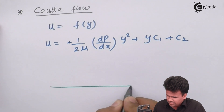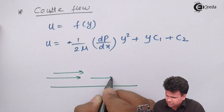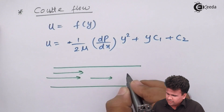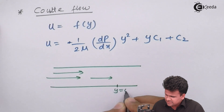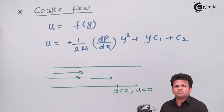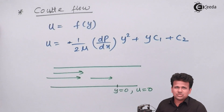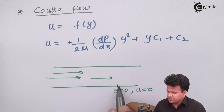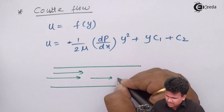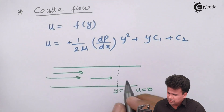Couette flow is a flow in which you have a horizontal surface and the fluid is flowing over this surface, with an object kept on the top surface of the fluid. At y = 0, the fluid velocity u = 0, because this is the initial layer and we apply the no-slip condition — the fluid does not slip over the solid surface. As we move away from the surface, velocity increases from minimum to maximum.